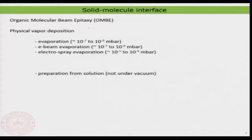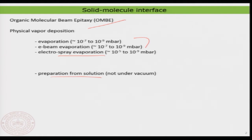Let me quickly go through what we did in the previous class. We said it is going to be organic molecular beam epitaxy — typically evaporation or e-beam evaporation. I also mentioned electrospray evaporation for preparation of molecular ad layers. I will also show an example of preparation from solution, which is a very economical method, though not as clean as vacuum deposition.